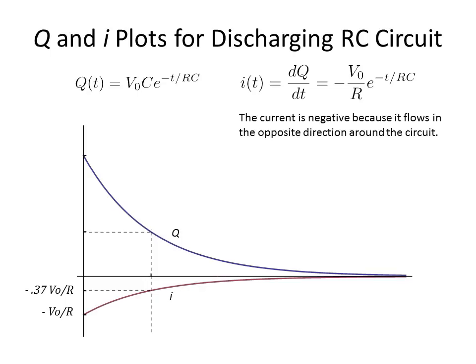The current flows in the opposite direction because we're discharging from the capacitor through the resistor.